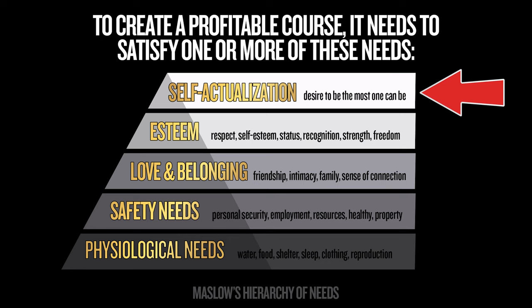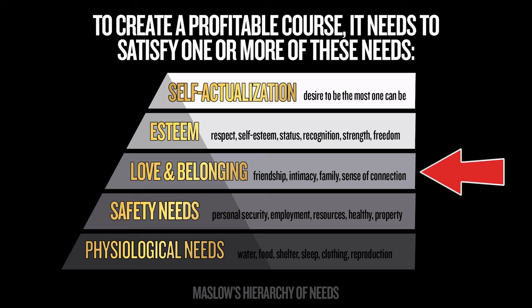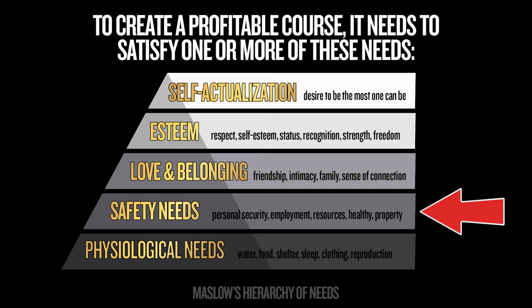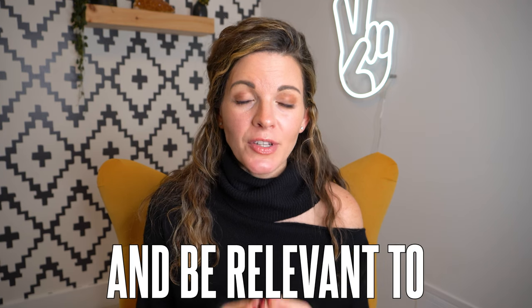There's a simple explanation for how you can identify that need. We're going to look at Maslow's Hierarchy of Needs. Almost every successful business in the world fits into one of these categories, including your online program topic. The categories are: self-actualization — the desire to be the most one can be; esteem — respect, self-esteem, status, recognition, strength, freedom; love and belonging — friendship, intimacy, family, sense of connection; safety needs — personal security, employment, resources, health, prosperity; and physiological needs — air, water, food, shelter, sleep, clothing, and reproduction. To create a profitable program, it has to tie into one of these needs.